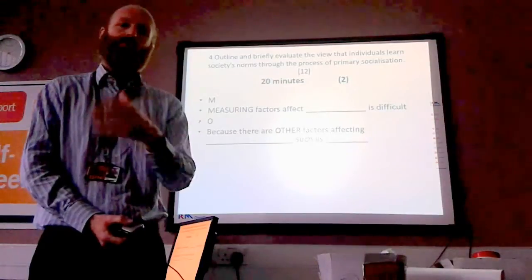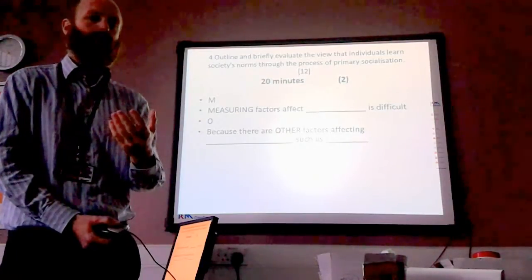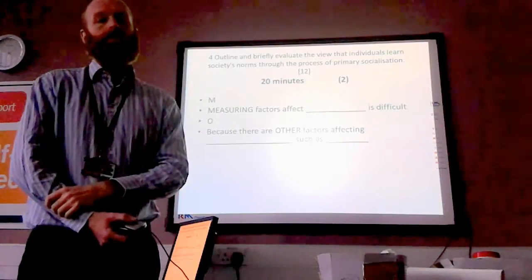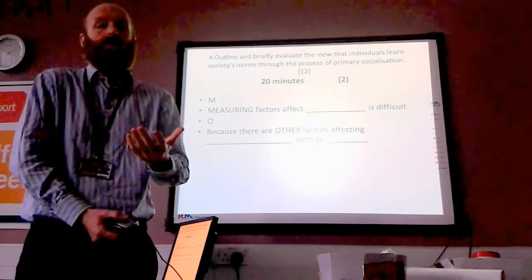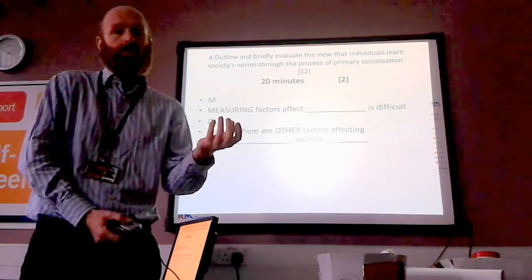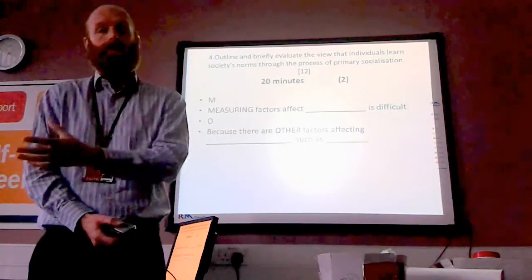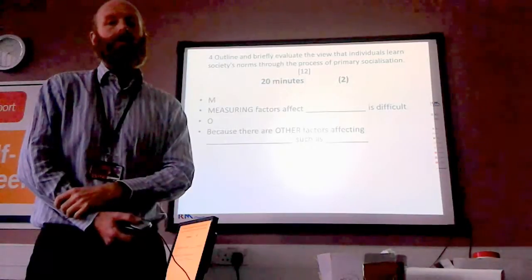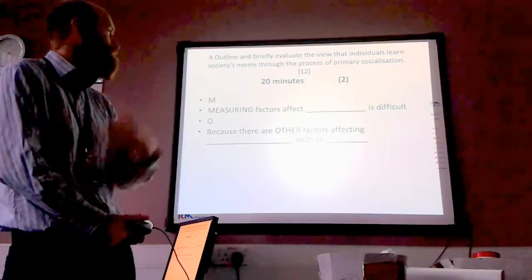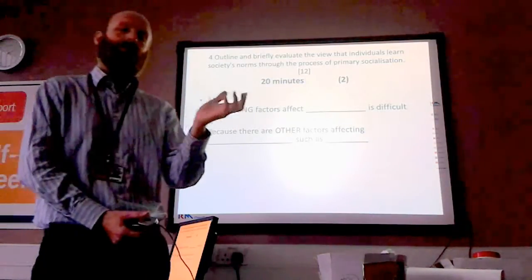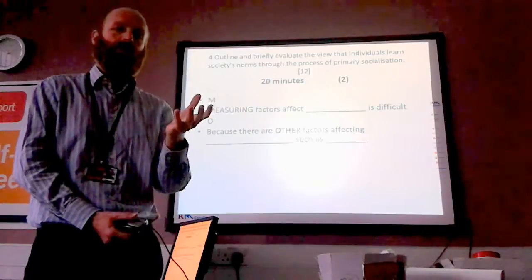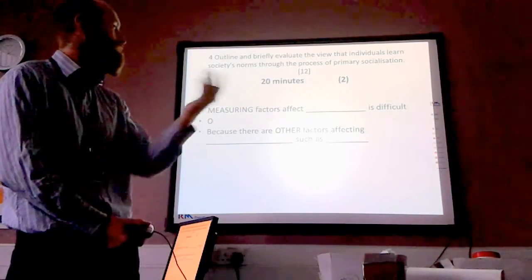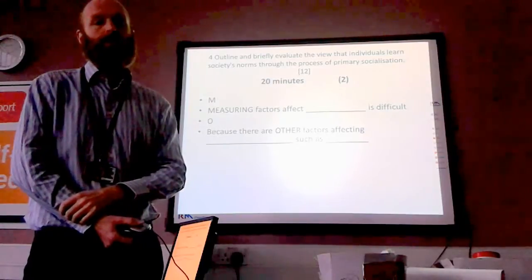O: there are other factors which also affect the learning of norms, such as — and then list whatever factors are not in the question. In this case it says primary socialisation, so you refer to secondary socialisation and how that can also affect the learning of norms. Whatever the question is, you've got to consider the weaknesses in it by considering the other factors and how they compare, in this case in the shaping of norms.